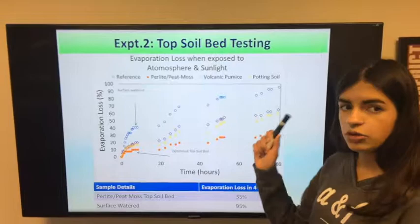For my second experiment, I tested multiple different topsoil beds and found that the perlite and peat moss topsoil bed had the best suppression of evaporation loss.